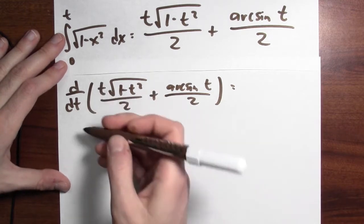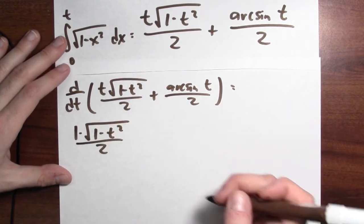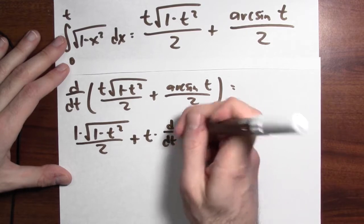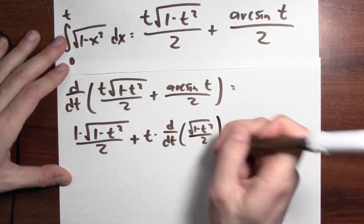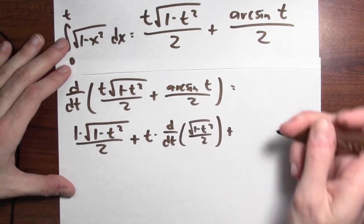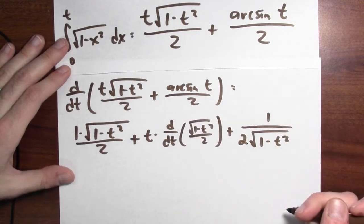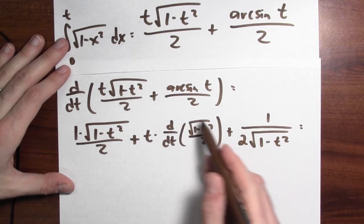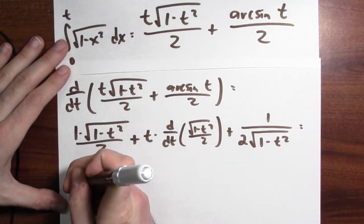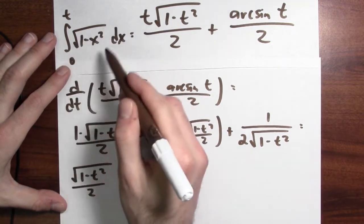It's the derivative of t, which is just 1, times the second thing — the square root of 1 minus t squared over 2 — plus the first thing, t, times the derivative of the second thing: d/dt of the square root of 1 minus t squared over 2. That's the derivative of the first term, plus the derivative of arc sine t over 2. The derivative of arc sine is 1 over the square root of 1 minus t squared, but then it's over 2, so I'll put a 2 there.